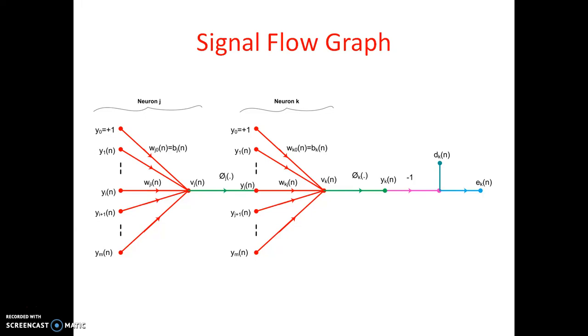After Vk of N there is an activation function phi k of dot which is something different from phi j of dot. So the final output is Yk of N.